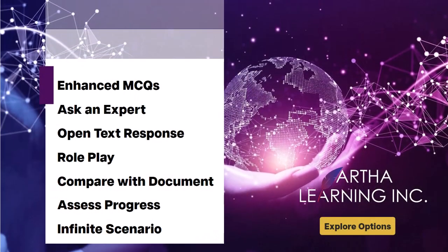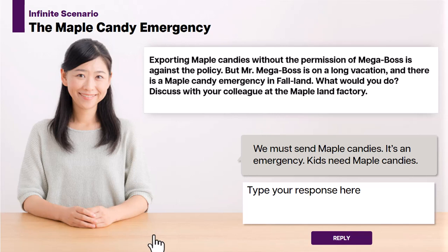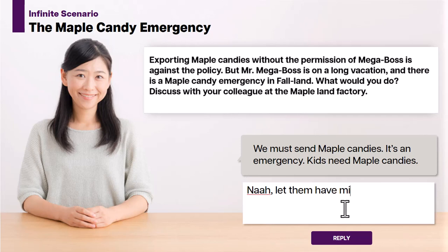What I have for you here is a silly, simple scenario. It's a shout-out to Canada because we're a Canadian company, so why not? Back to the scenario — there is a maple candy emergency, and it needs to be exported, but the only person who can approve that is on a long vacation. Here we are asking the learner to write down how they would respond to this scenario, to this situation. And they can write whatever they want.